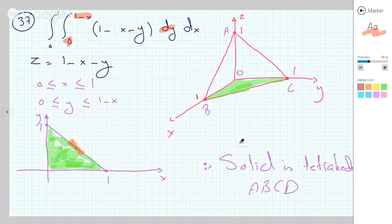And the surface z equals 1 minus x minus y. If I let x and y be 0, I get 1 for z. If I let x and z be 0, I get 1 for y. And if I let z and y be 0, I get 1 for x.